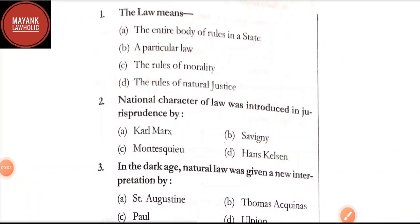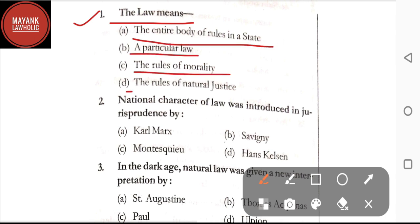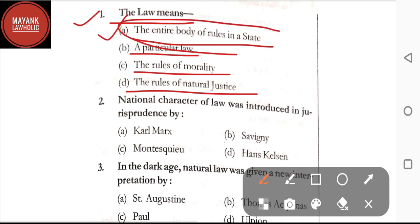Hello everyone, welcome back to MCQs of Mayank Lawholic. In this video we will be starting from jurisprudence. Question number one: the law means — option A: the entire body of rules in a state; option B: particular law; option C: the rules of morality; option D: the rules of natural justice. The correct answer is option A — the law means the entire body of rules in a state.